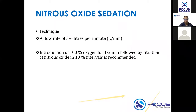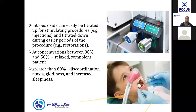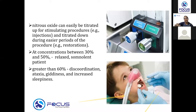A nasal hood is placed during conscious sedation — one port is for nitrous oxide and one is for oxygen. When you start the procedure, you give 100 percent oxygen for around one to two minutes. After that, you reduce the oxygen concentration by 10 percent and increase the nitrous oxide by 10 percent — so oxygen becomes 90 percent and nitrous oxide becomes 10 percent — continuing in 10 percent intervals.